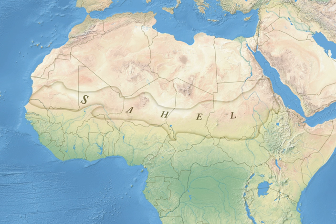The name is derived from the Arabic word 'Sahil', meaning 'coast' or 'shore' in a figurative sense, in reference to the southern edge of the vast Sahara, while the name Swahili means 'coastal dweller' in a literal sense.